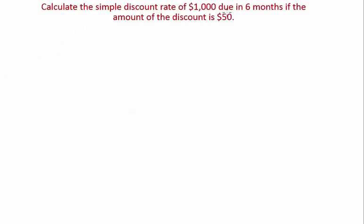Calculate the simple discount rate of a thousand dollars due in six months if the amount of discount is $50. So we know discount is 50. We also know that the future value is 1000 and T is 6 on 12 years. We want to find the simple discount rate.